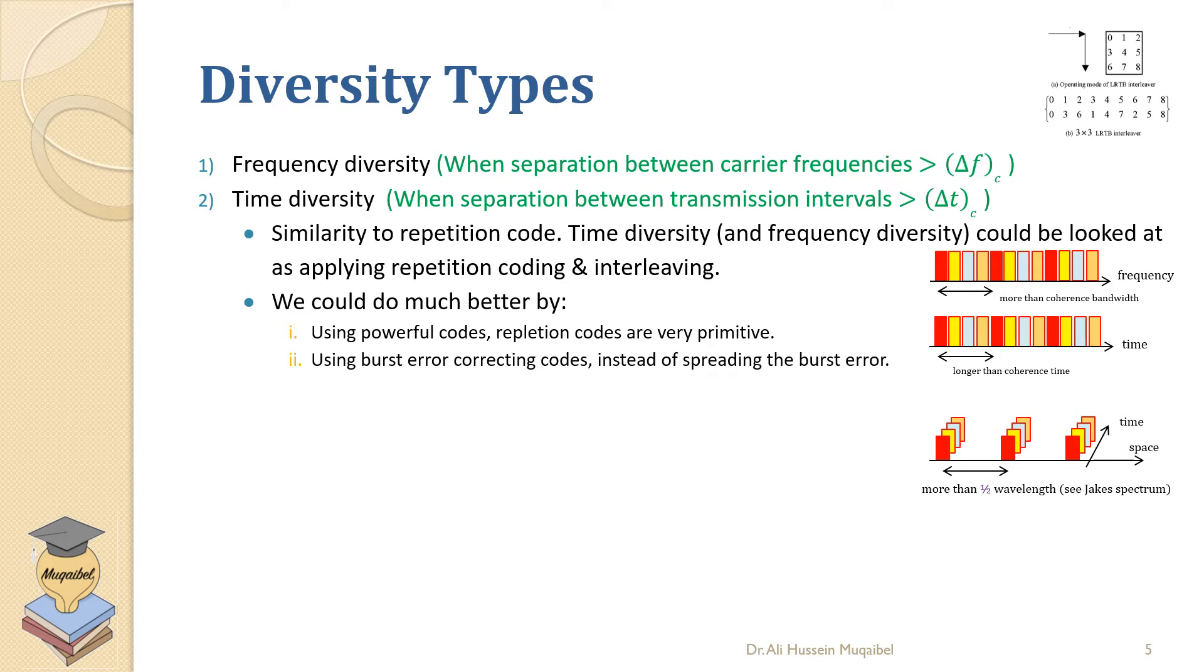We could also refer to the coherence time by Tc, like in the Andrea Goldsmith textbook. Then we can guarantee some advantage. However, if we send a time less than the coherence time, then the two branches will be going over the same fade.